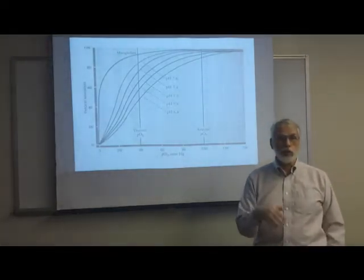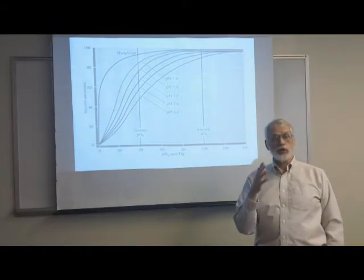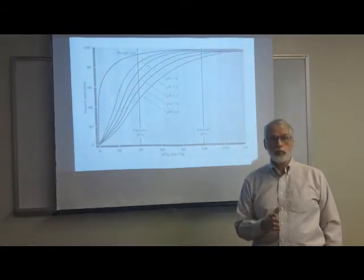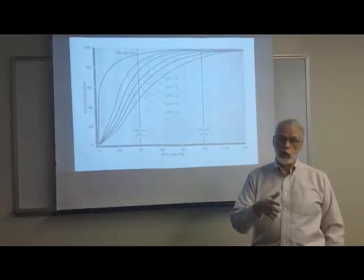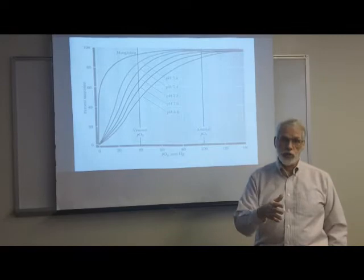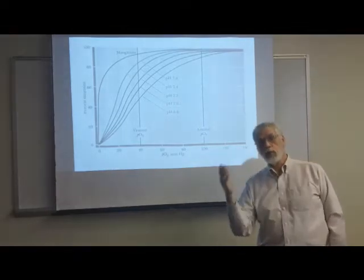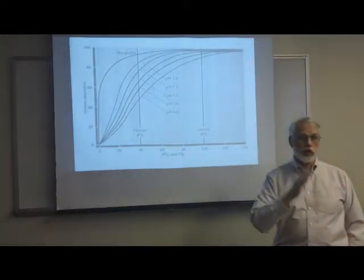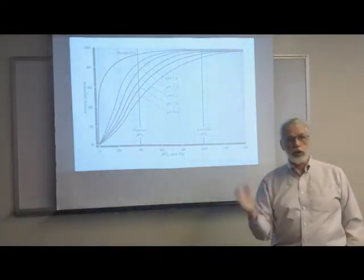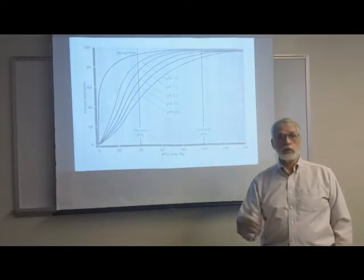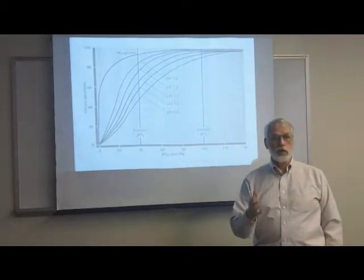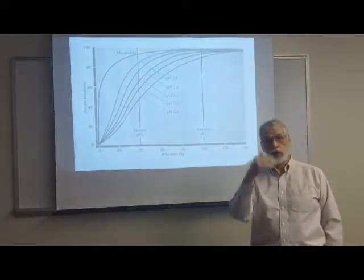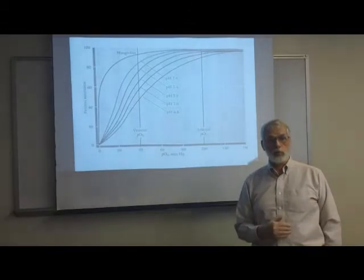In doing so, that's going to start stabilizing the deoxy form. If I stabilize the deoxy form, then I make it harder for oxygen to bind. Therefore, the curve will shift to the right, and the P50 will increase — the same sequence that we saw before.